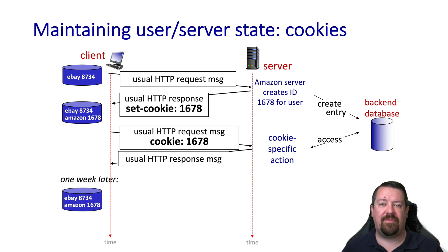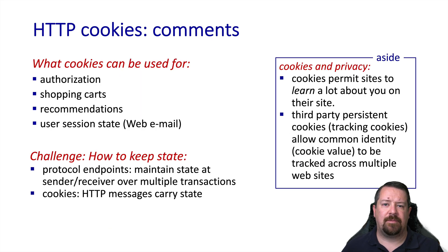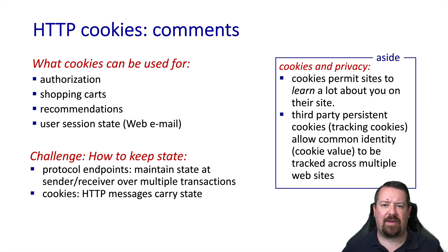A week later, these cookies are still set and servers can still associate that user with those database entries. Cookie uses include authorization — tracking whether a user has signed in — keeping track of the shopping cart, showing recommendations based on past browsing, or maintaining a stateful web interface such as email. We typically hear about cookies and their negative relationship with privacy. In particular, third-party cookies allow a user to be tracked across multiple websites, where each site includes objects from a third party that lets that third party know about the various URLs the user is visiting.